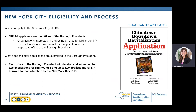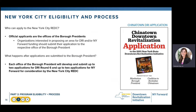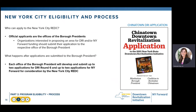For New York City boroughs, the eligibility and application submission process is a bit different. In New York City, it's a two-step application submission process. Organizations interested in proposing an area must submit their application to the respective office of the borough president. Each borough president's office will then develop and submit up to two applications for DRI Round 6 and up to two applications for New York Forward for consideration by the NYC Regional Economic Development Council. In New York City, community organizations are also eligible to submit an application to the office of borough presidents.